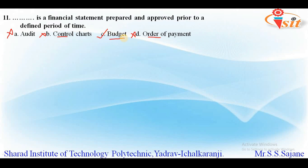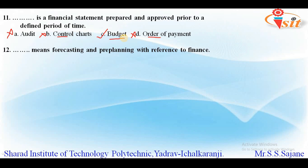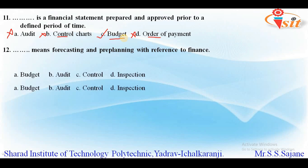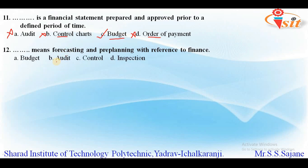So the answer for this question is option C, that is budget. Budget is a financial statement prepared and approved prior to a defined period of time. The next question: which of the following means forecasting and pre-planning with reference to finance? The options are option A budget, option B audit, option C control, and option D inspection. All these terms we have already discussed; the question is just asked in different wording. So the answer is again budget, that is option A.